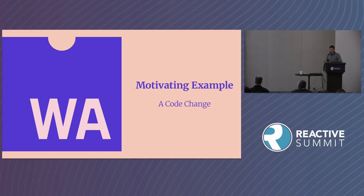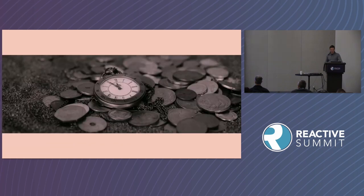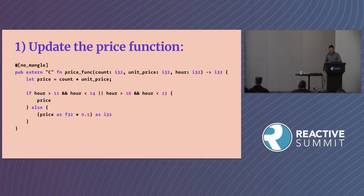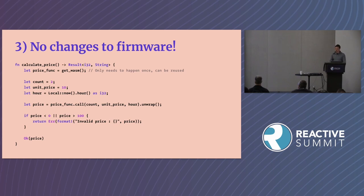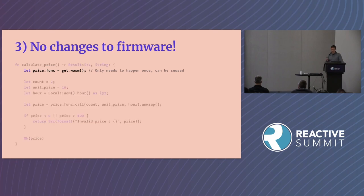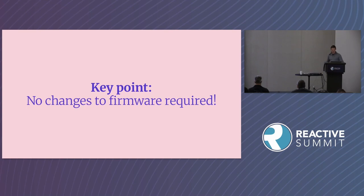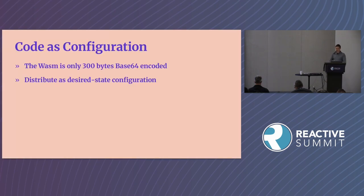To conclude the motivating example, let's look at making a code change in this new world using WebAssembly. In addition to off-peak pricing, we want to introduce happy hour pricing from 2 to 5 p.m. The price function is updated to return peak prices only during those times, otherwise discounting by half. We compile the WebAssembly again, and then it can be used without any code changes to firmware. The new WebAssembly function must be reloaded, but otherwise there are no code changes needed to the edge IoT device. No changes to firmware — this is the key point.